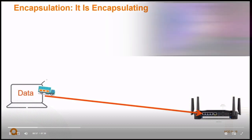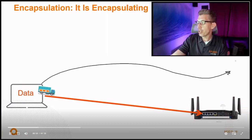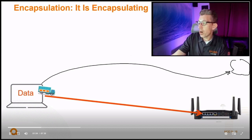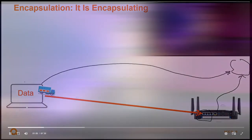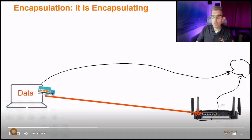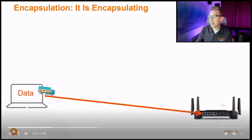Encapsulation is the process of taking your data that you want to send — whether you're requesting a website or whatever — from your computer to whatever destination you're trying to reach. What carries it over there are switches and routing functions in between, but ultimately the original source is your IP address and the final destination is the destination address. Once it leaves your NIC card, your computer is kind of done working with it.